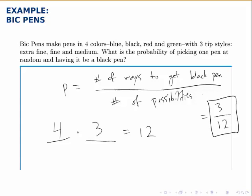Now, of course, we could also say it's one fourth because there are four colors and each one is equally likely. But the reason we did it the way we did was to illustrate a simple example of how the fundamental counting principle can be used to count up the number of possibilities in order to do a probability problem.